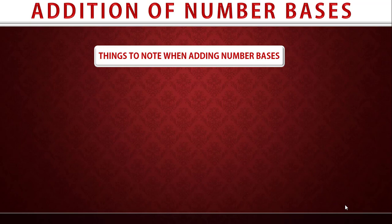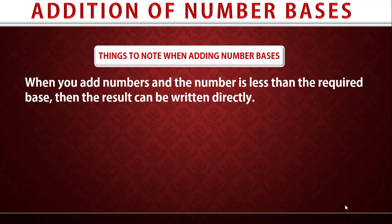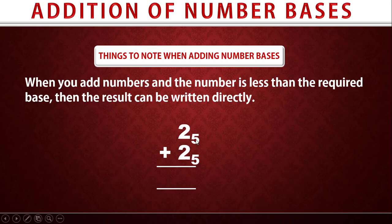The very first thing we need to know is: when you add numbers and the result is less than the required base, the result can be written directly. For example, two plus two gives four, and four is less than the required base of five, so we can write the value four directly.